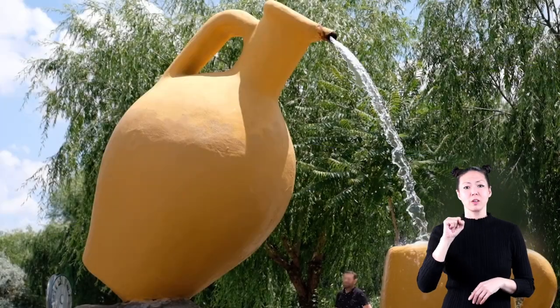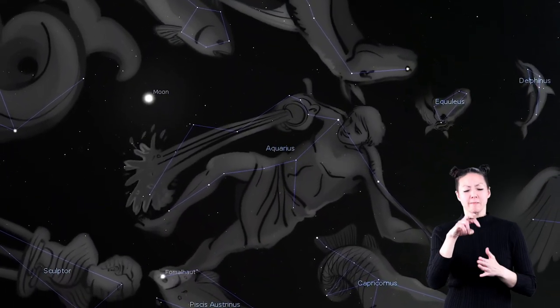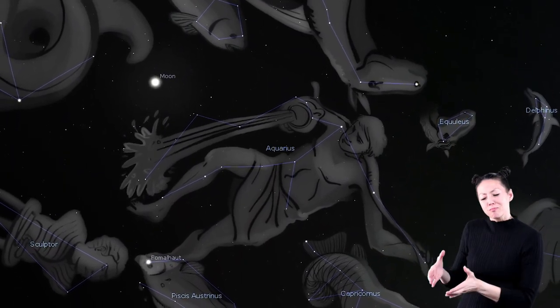Aquarius means water carrier. This constellation shows Ganymede kneeling in the sky, pouring water out of a pitcher.